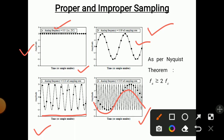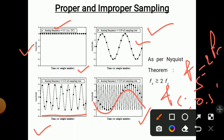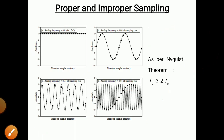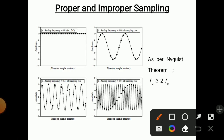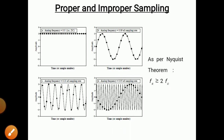FS equal to two times FC means FC should be 0.5 FS. In the last diagram it is greater than 0.5 — that is 0.95 — which is why we got correct sampling in the last graph. So this is the concept of proper and improper sampling.